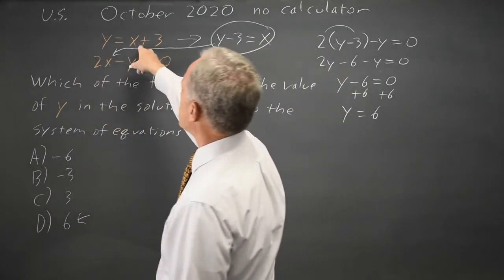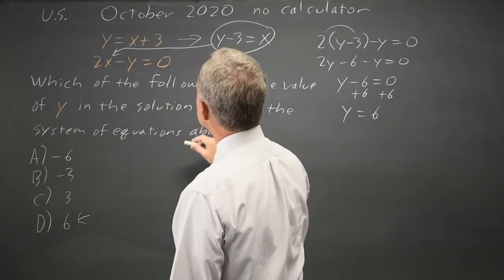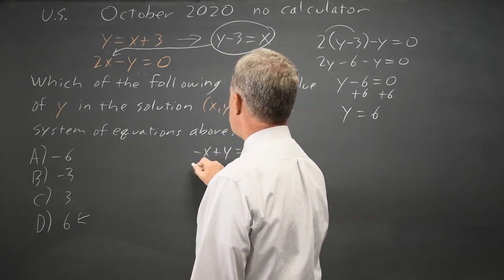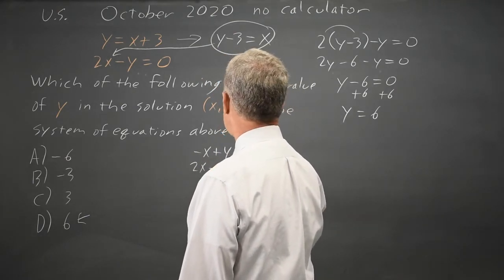Alternatively, I can move the x to the left-hand side. Let's do that. Negative x plus y equals 3, and 2x minus y equals 0.